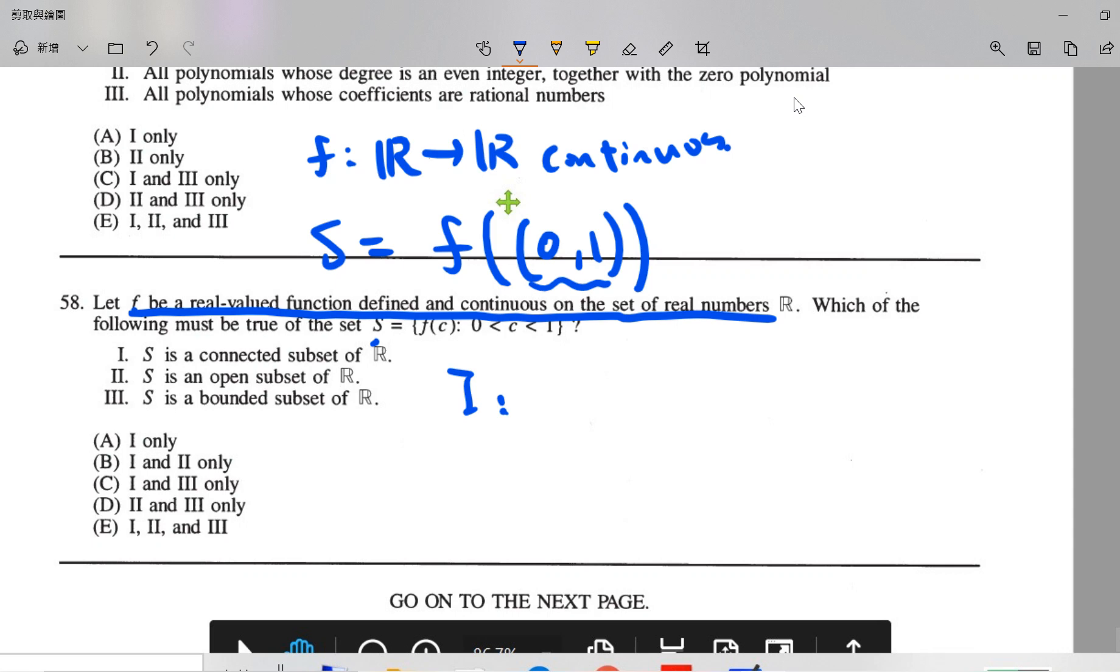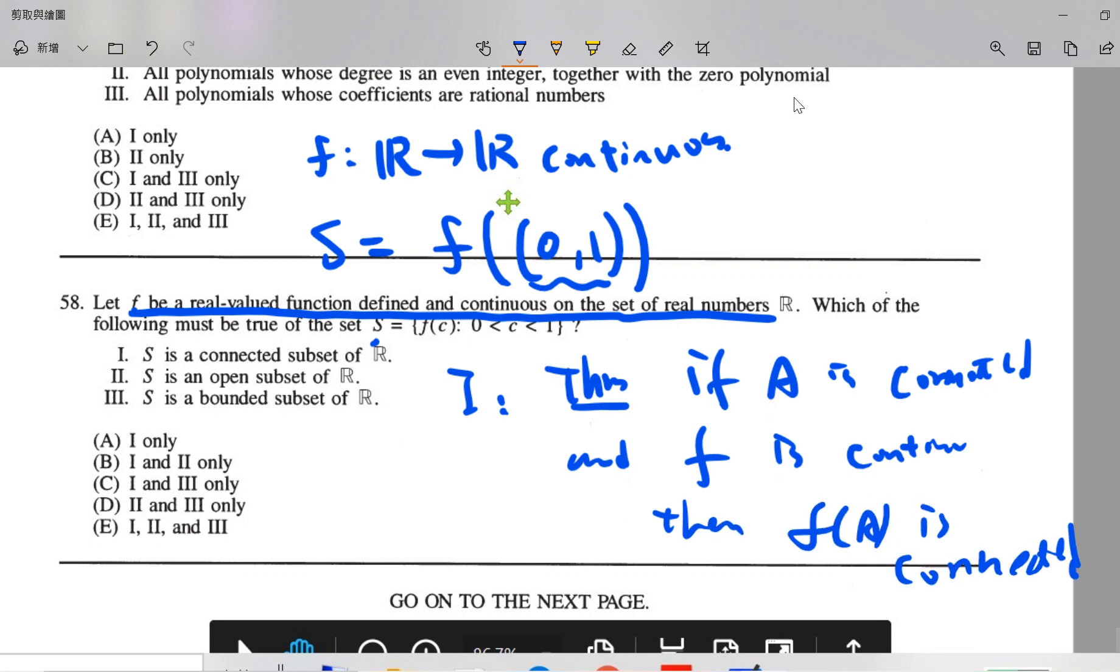First one, S is a connected subset. So the theorem is if A is connected and f is continuous, then f of A is connected. So this one is correct because the open interval (0,1) is connected.